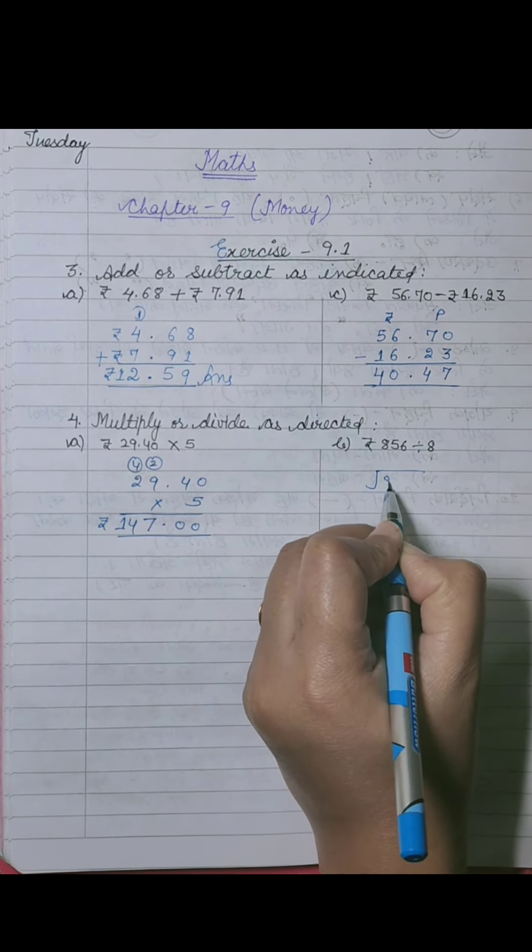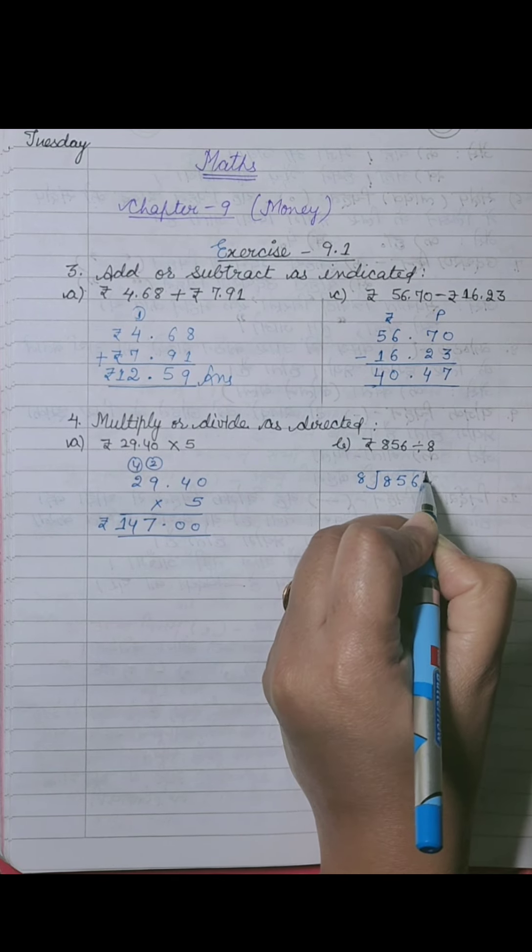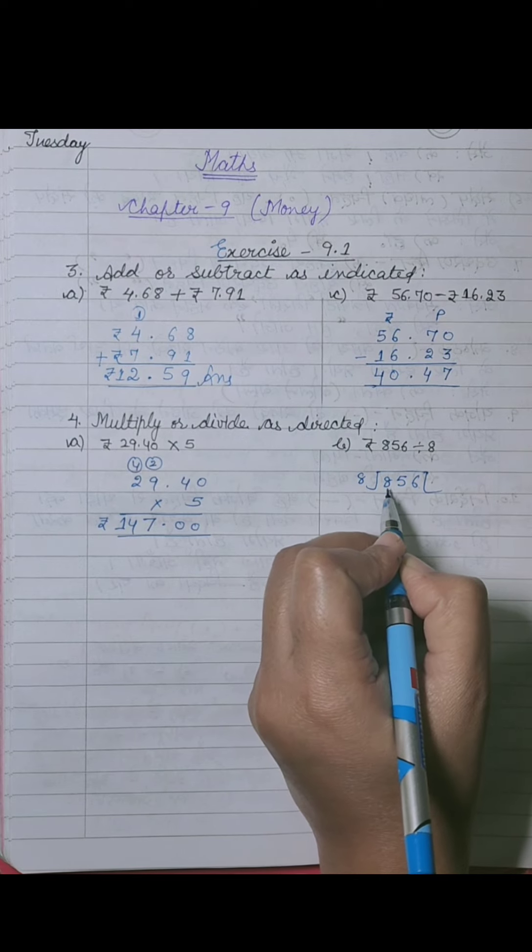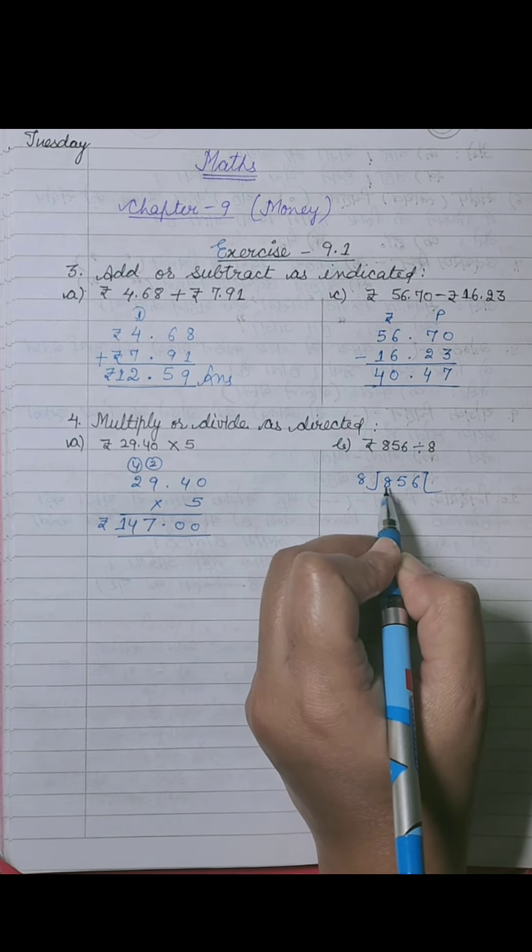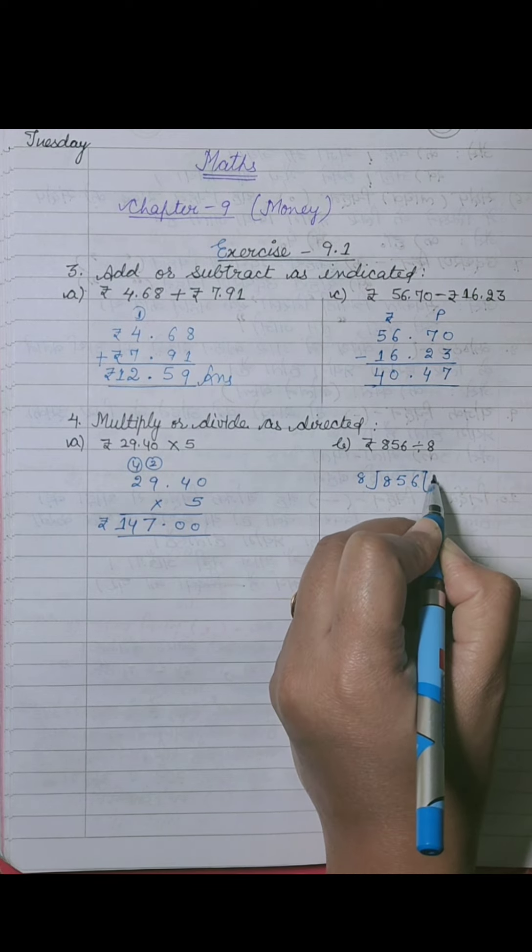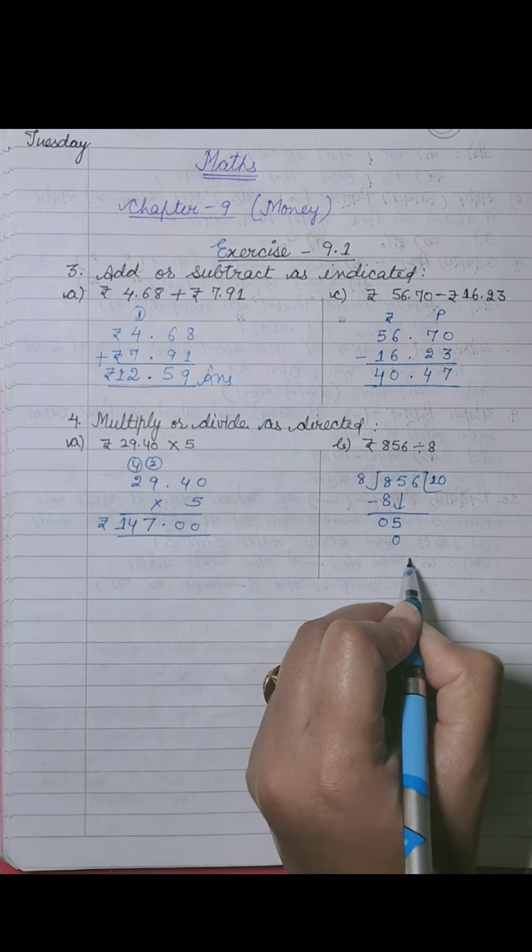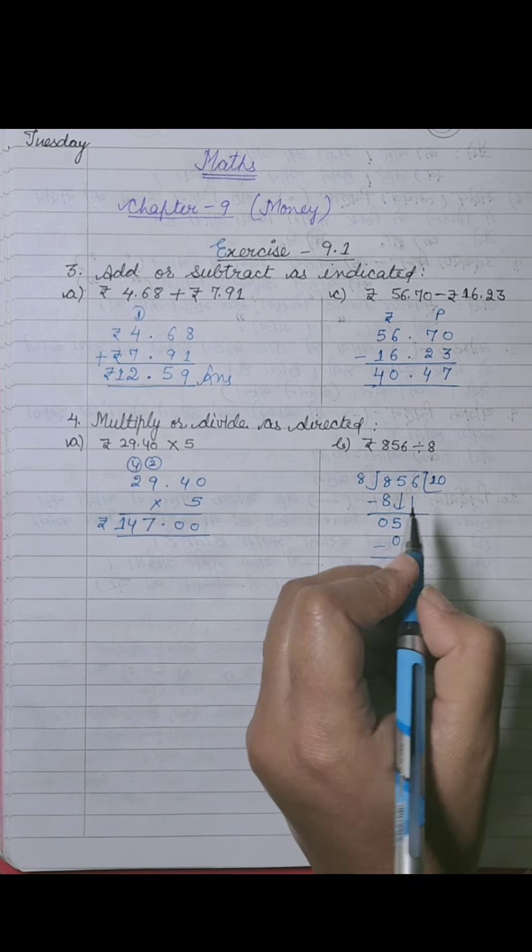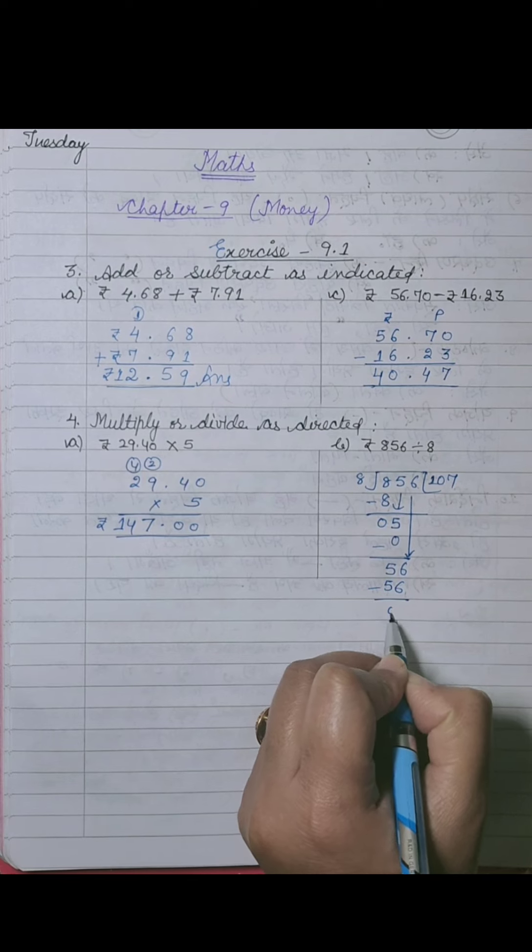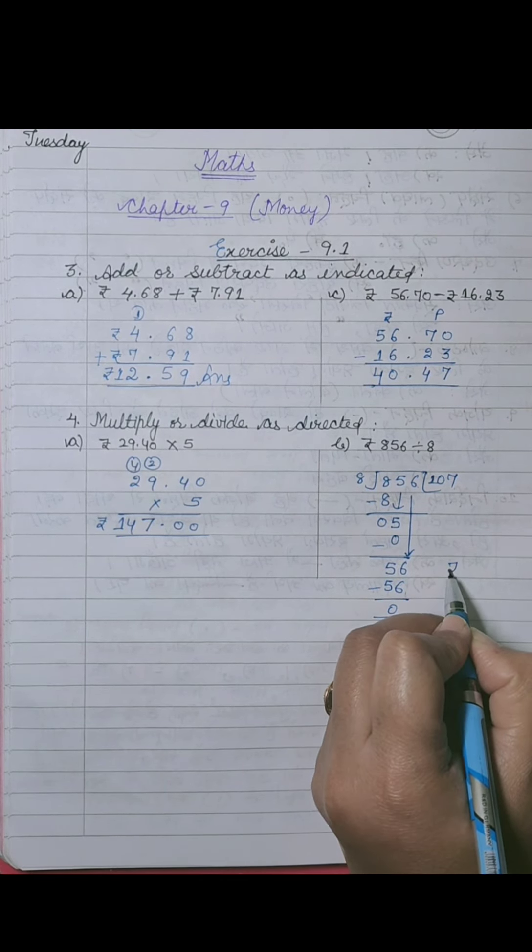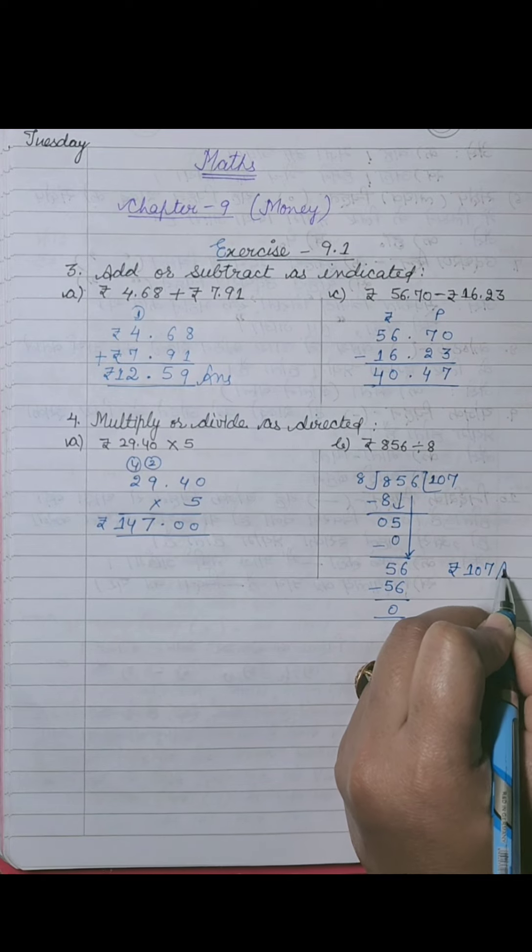Next is part b: rupees 856 divided by 8. So 856 is the dividend, 8 is the divisor. We will divide this number by 8. First, we check if 8 can divide the first digit. Yes, 8 ones are 8, then subtract to get 0. Bring down 5. 8 doesn't go into 5, so we place 0. 5 minus 0 is 5. Bring down 6 to get 56. 8 sevens are 56, and the remainder is 0. So rupees 107 is our answer.